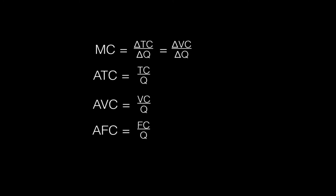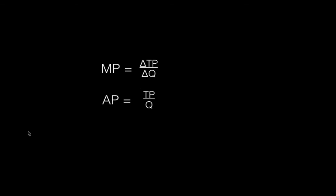Now we have our full set of costs. Marginal cost is the change in total cost for a given change in output — it's the slope of the total cost curve and also the slope of the variable cost curve, since what's changing with output is variable cost. Average is just total divided by quantity: average total cost is total cost divided by quantity, average variable cost is variable cost divided by quantity, average fixed cost is fixed cost divided by quantity. Also, I should note a labeling correction: marginal product is the change in total product when we change the quantity of variable input, and the horizontal axis on the production function should be labeled quantity of input, not quantity.